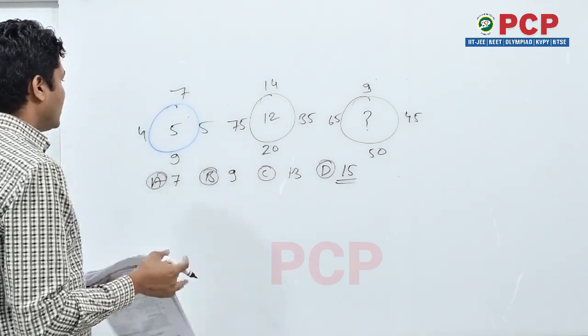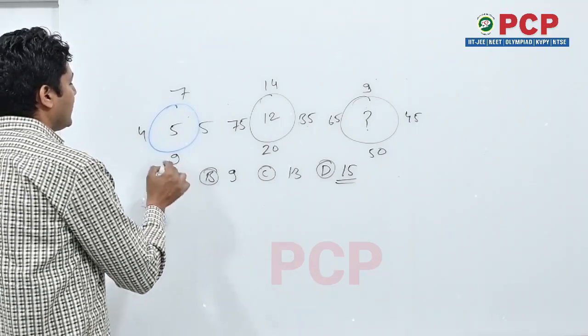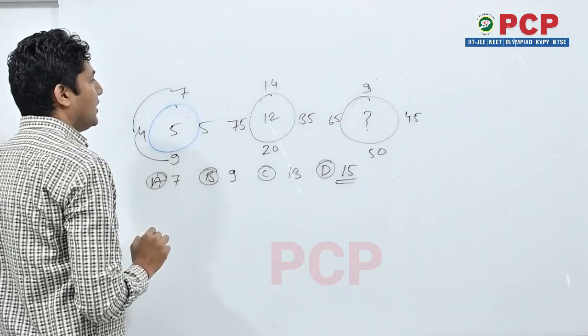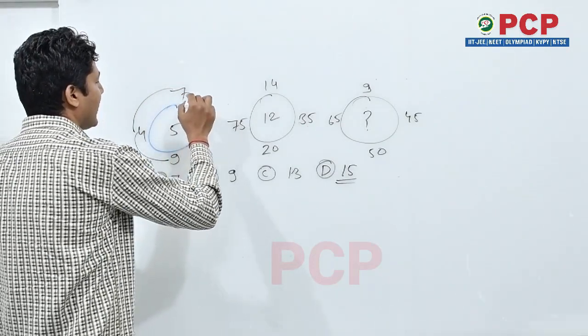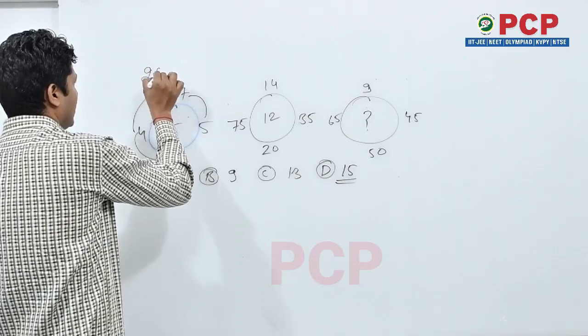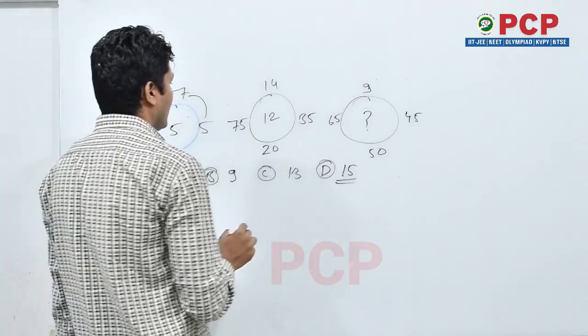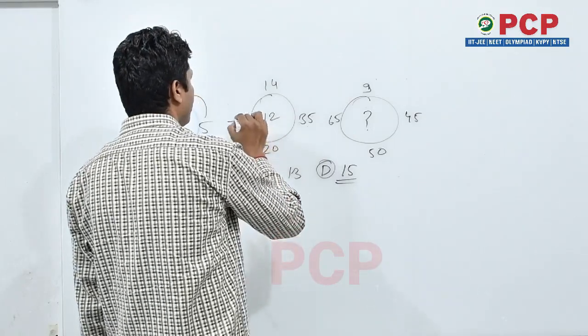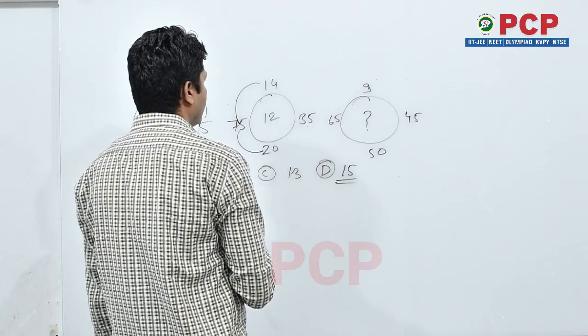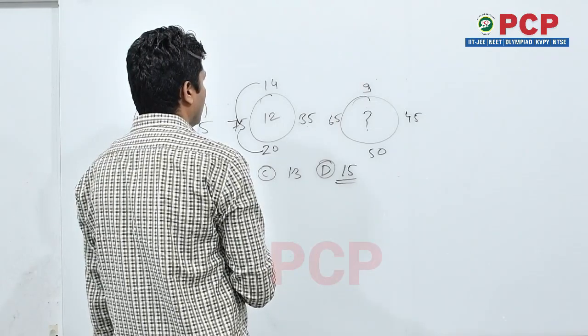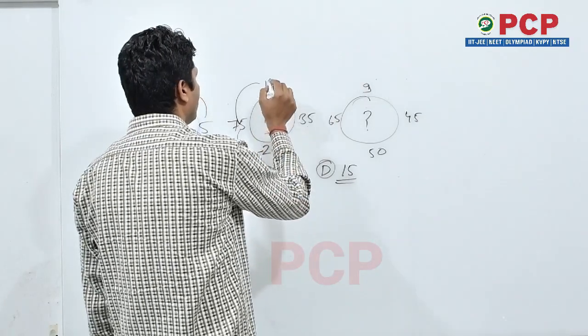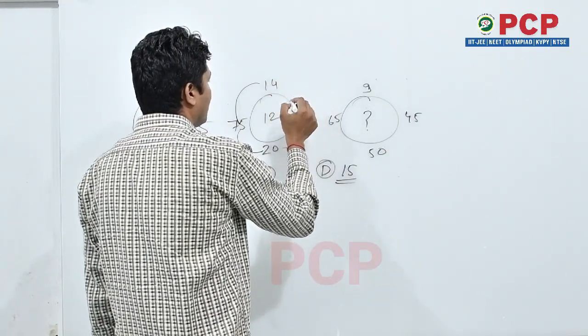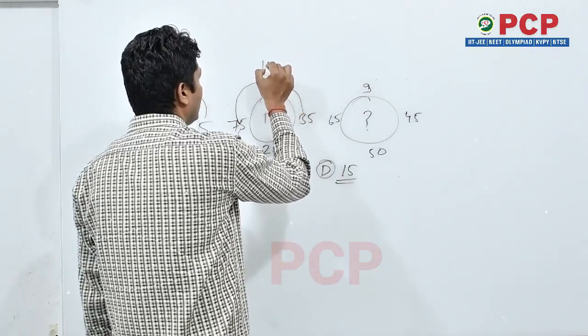Now we will see by adding these. 9 plus 4 is 13, 13 plus 7 is 20, 20 plus 5 that is 25. Addition is happening. After that 95, 95 plus 14 that is 109, 109 plus 35 that is 144.